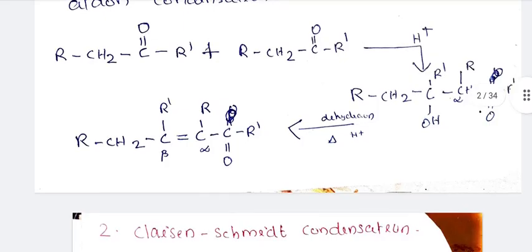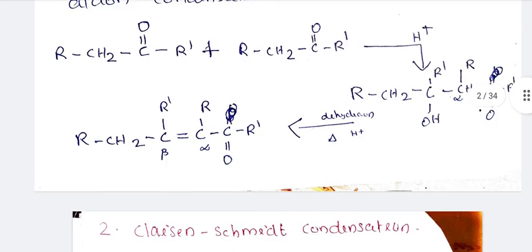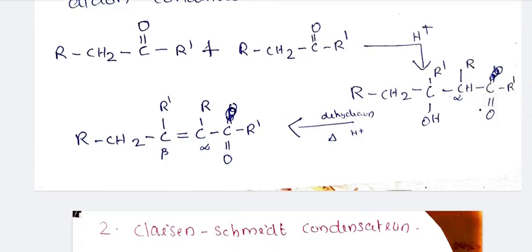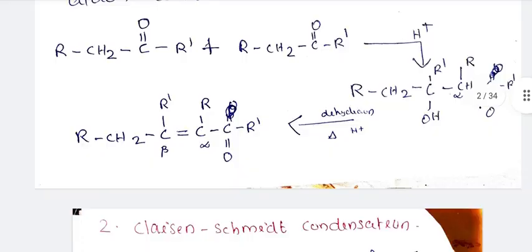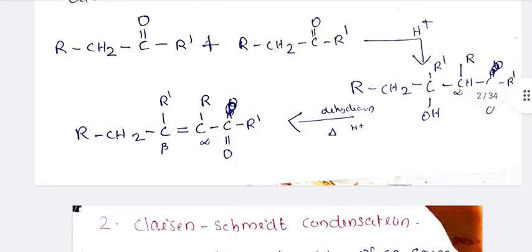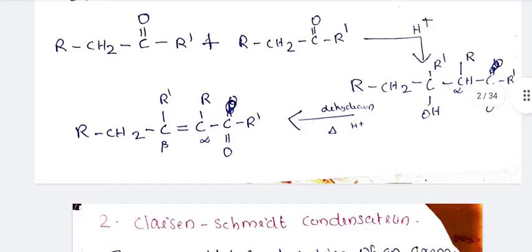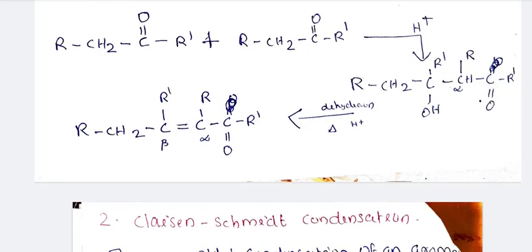The negative charge on the alpha carbon attacks. In an alkaline medium, we go to hydroxide. We form RCH₂CR'(OH)CHRCO — the beta hydroxy product. That is the aldol reaction. Then we carry out thermal dehydration, going to high temperature to eliminate H₂O.